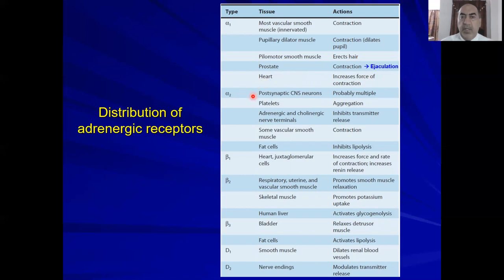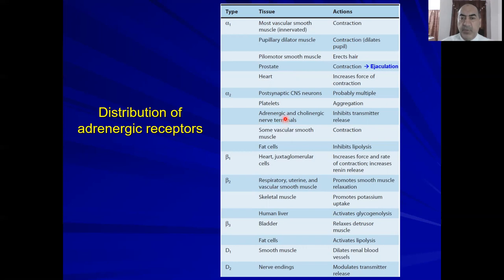Alpha-2 receptors are mostly post-synaptic. In the platelets, they cause platelet aggregation. At adrenergic and cholinergic nerve terminals they are presynaptic autoreceptors — their activation inhibits further release of the neurotransmitter. In the vascular smooth muscle, both alpha-1 and alpha-2 cause vasoconstriction. In fat cells, alpha-2 activation causes inhibition of lipolysis.